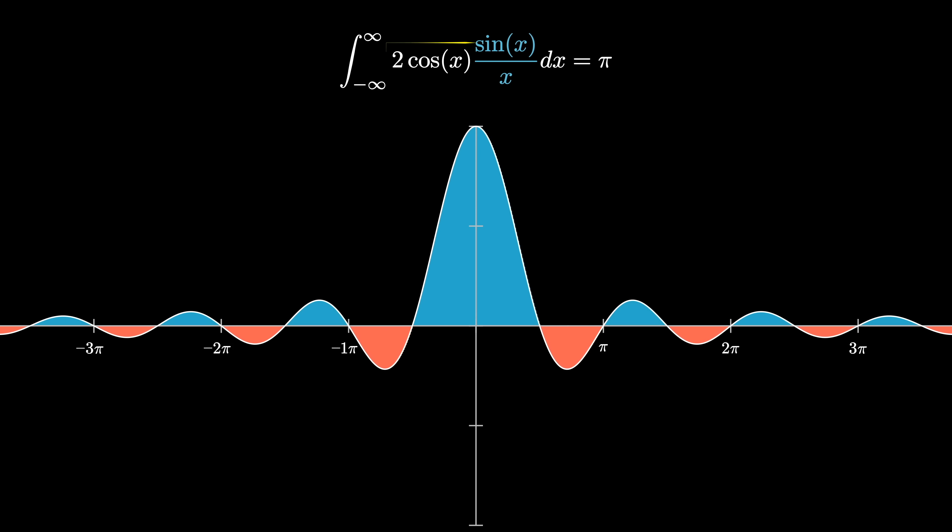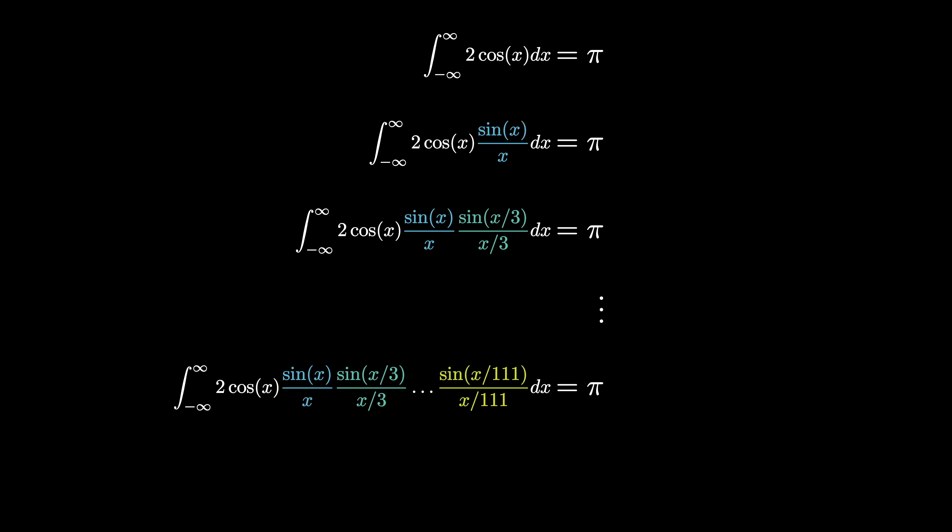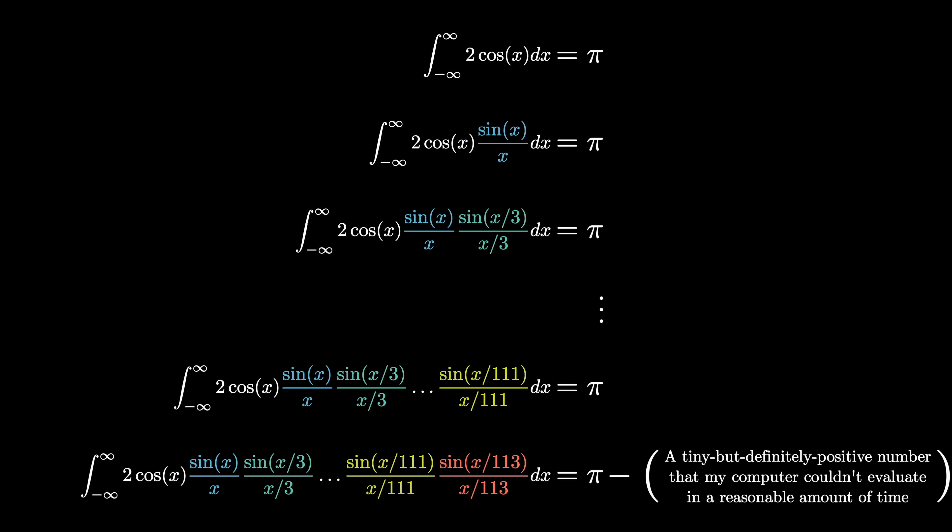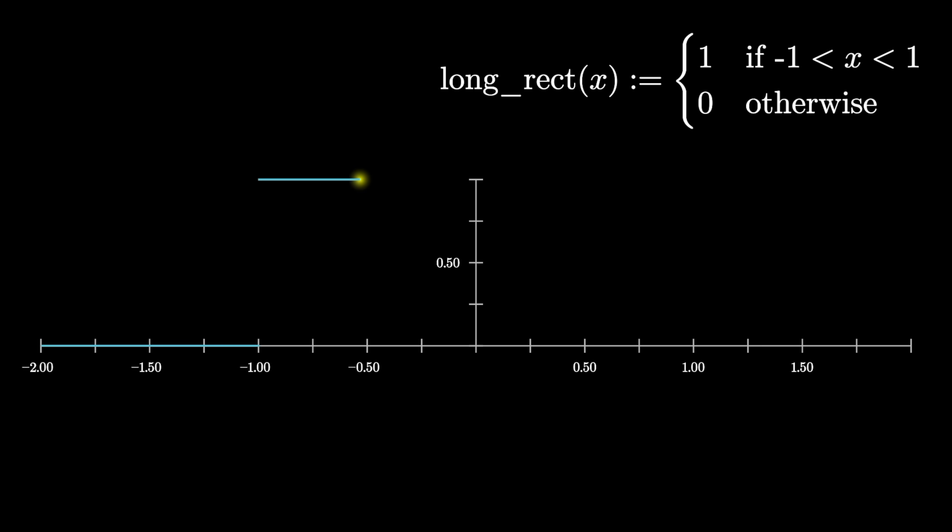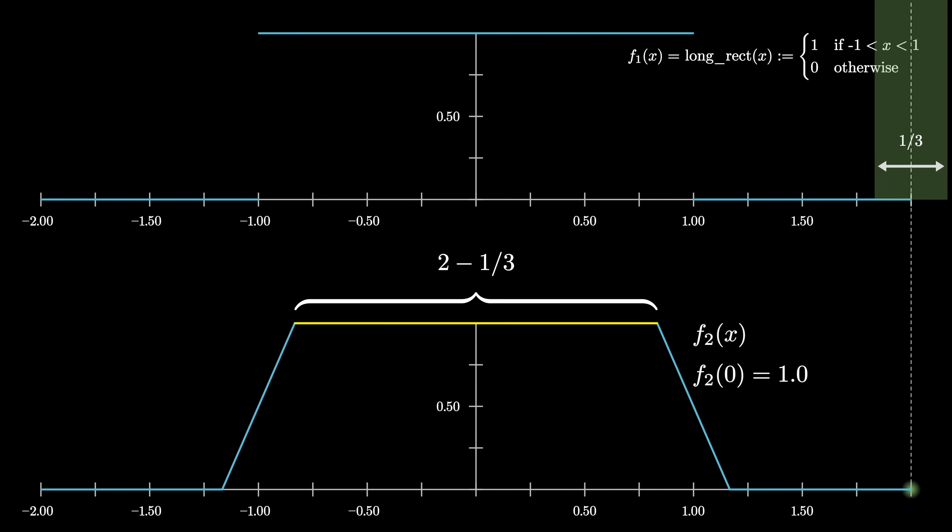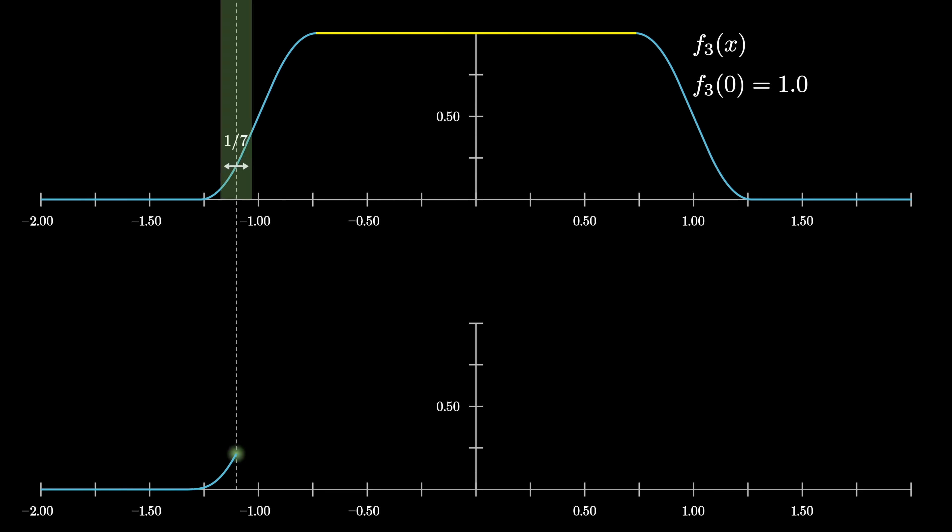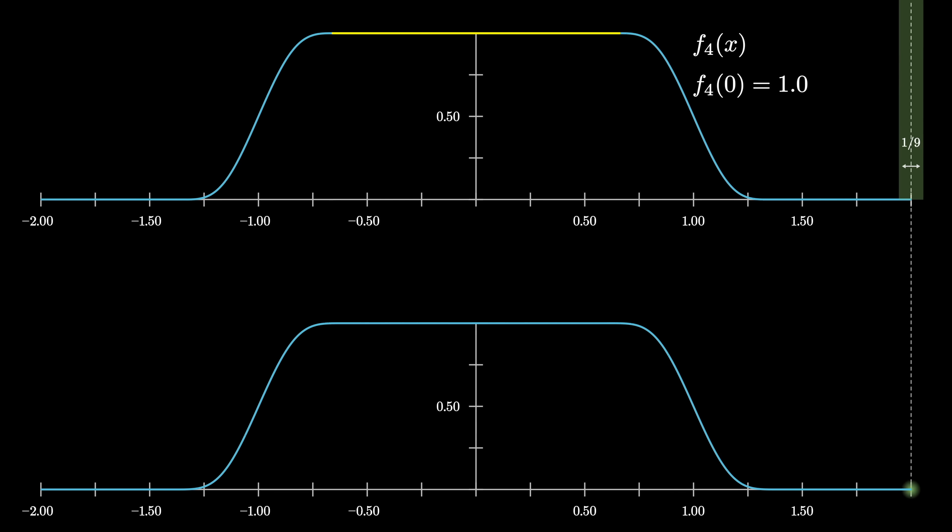And when it comes to the case where we add the 2 cosine of x term inside the integral, which caused the pattern to last a lot longer before it broke down, in the analogy, what that will correspond to is the same setup, but where the function we start with has an even longer plateau, stretching from x equals negative 1 up to 1, meaning its length is 2.